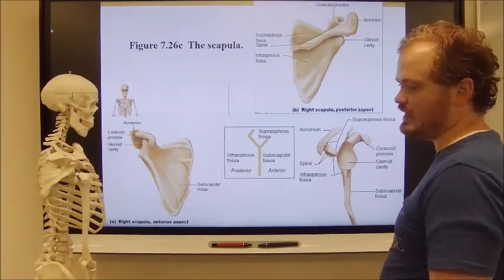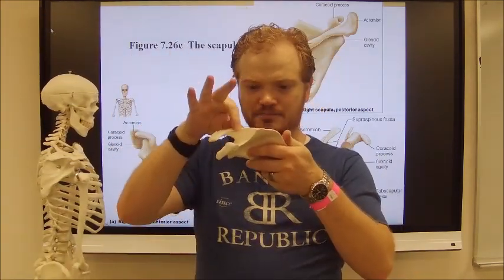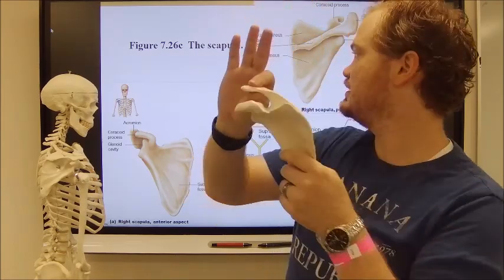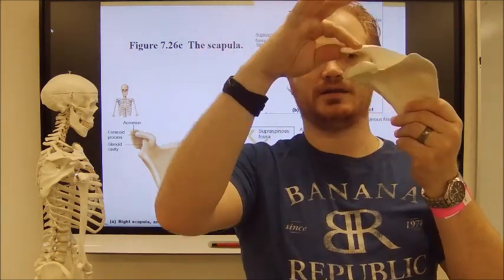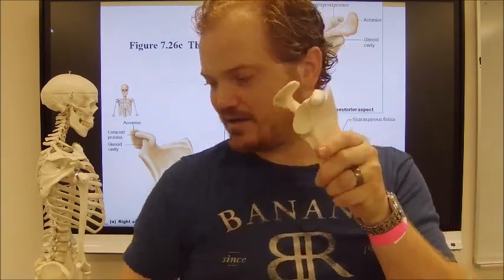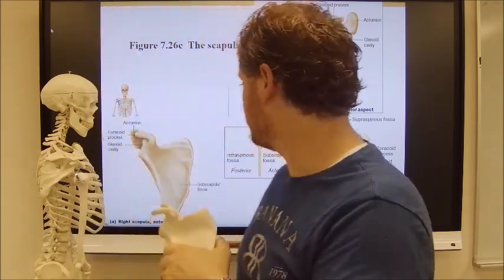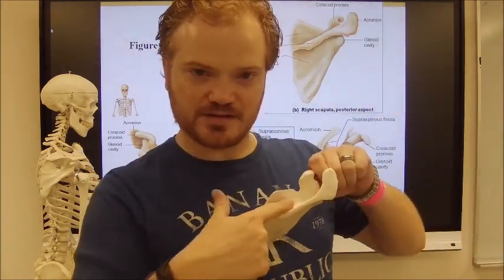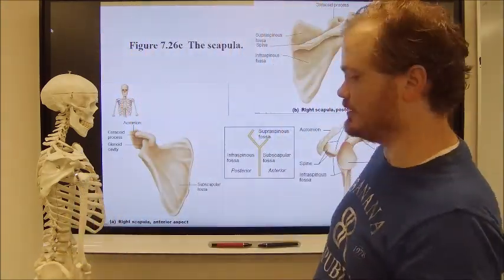On the scapula, the spine of the scapula comes out to the acromion process. From there you can drop down to the coracoid process. Then there's the glenoid cavity — the point of articulation for the humerus, which connects in right there. You also have the supraspinous fossa above the spine, the infraspinous fossa below it, and if you flip it over, the subscapular fossa.